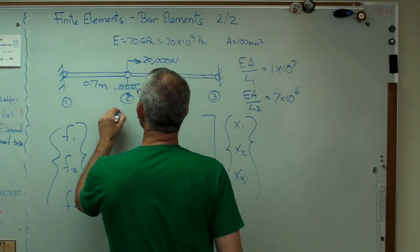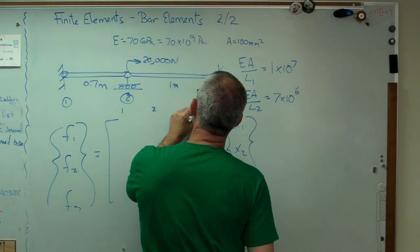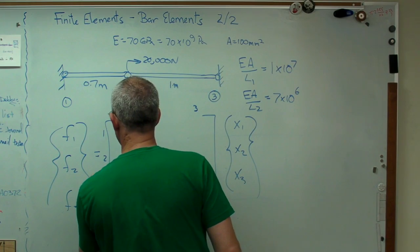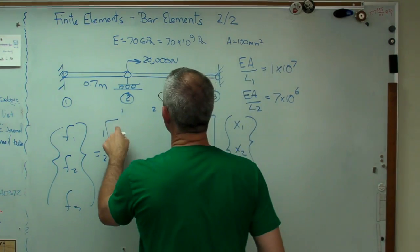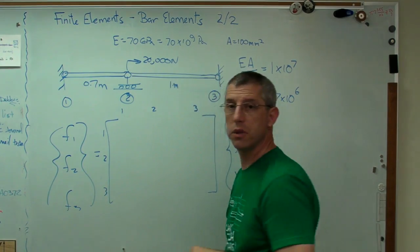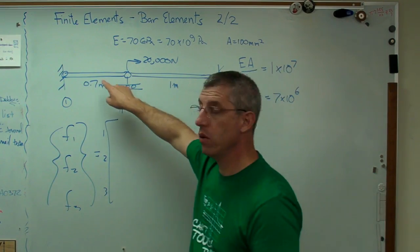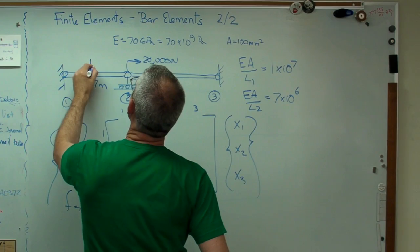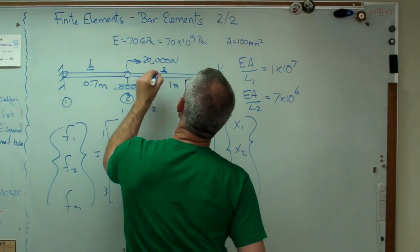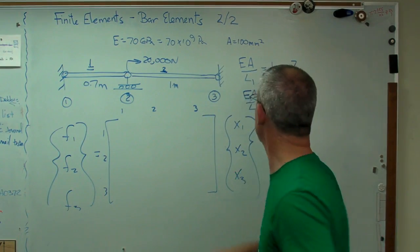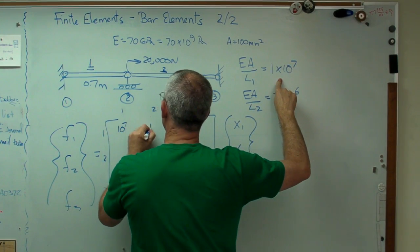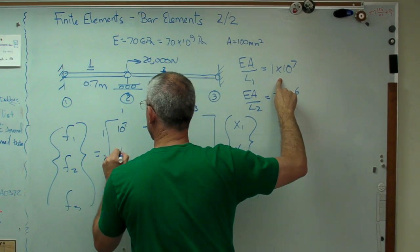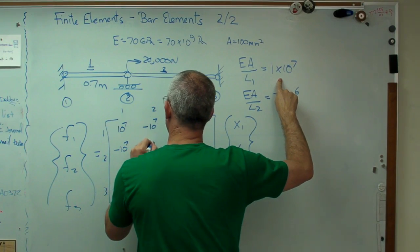So what I'm going to do is I'm going to just, for bookkeeping purposes, I'm going to write some numbers here. I'm going to erase those in a second. But those are going to be the first and second terms in element 1. This is element 1 there. And that's element 2 there. The element 1 stiffness matrix. So I got 10 to the 7, minus 10 to the 7, minus 10 to the 7, and 10 to the 7.